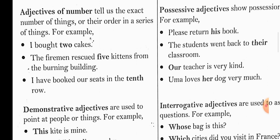Second example: The fireman rescued five kittens from the burning building. How many kittens were saved? Five. Here the exact number of kittens is being told — the word 'five' is telling the exact number. Third example: I have booked our seats in the tenth row.